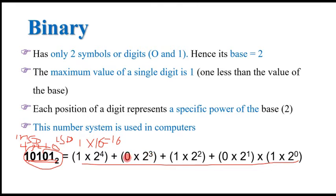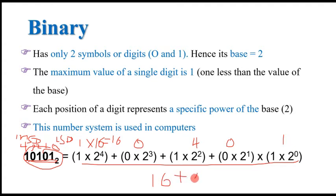Then 2 to the power of three is 8; every number multiplied by zero gives zero, so that term is zero. 2 to the power of two is 4; four times one is 4. 2 to the power of one is 2; two times zero is zero. 2 to the power of zero is 1; one times one is 1. When we add: 16 plus 4 plus 1 equals 21 with base ten. These are the decimal representation of this binary number.